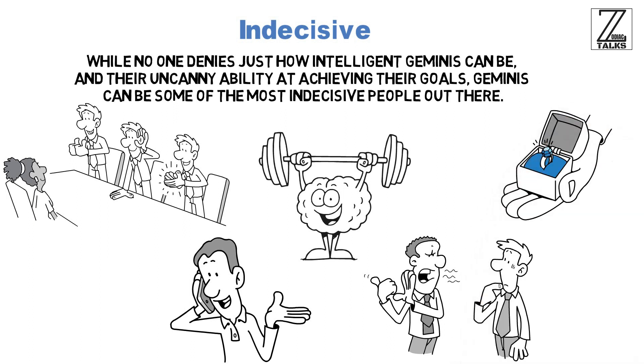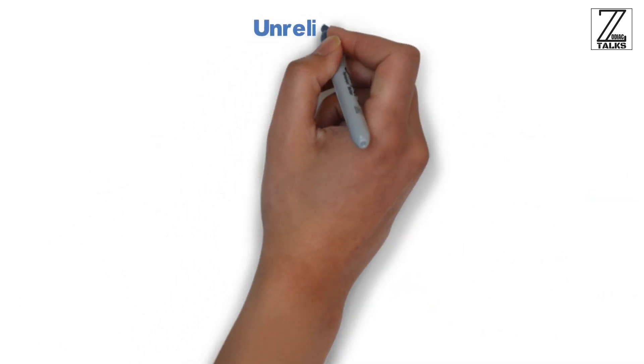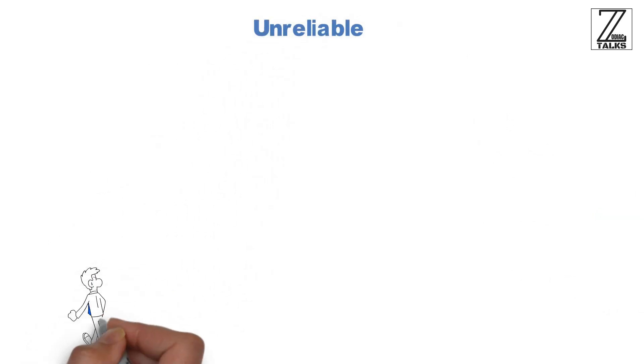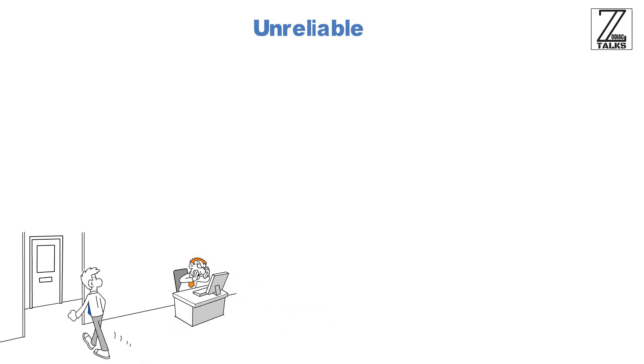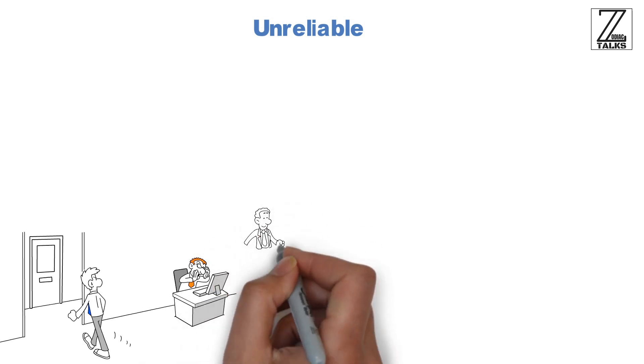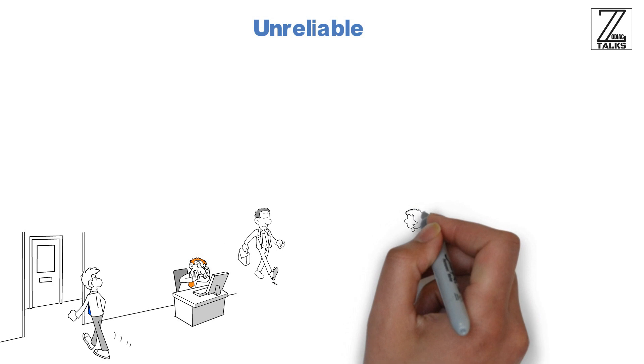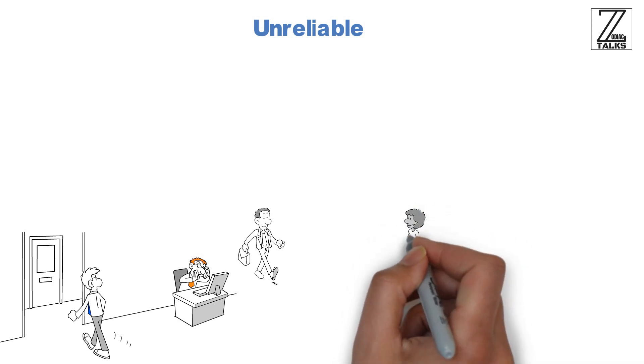Unreliable. Because Geminis are both impulsive and indecisive, it can be pretty hard to rely on them, and knowing you can trust your partner is crucial in any relationship.